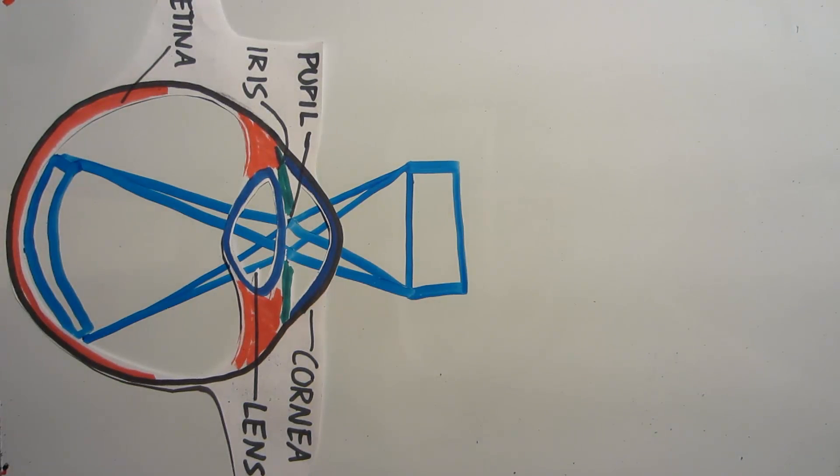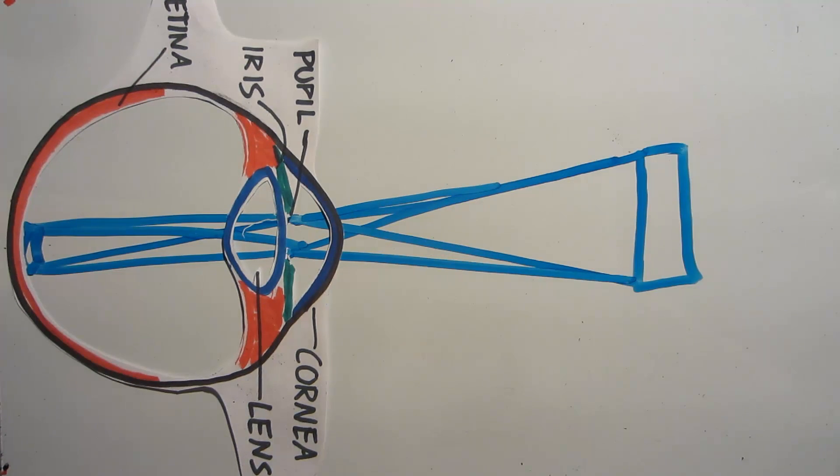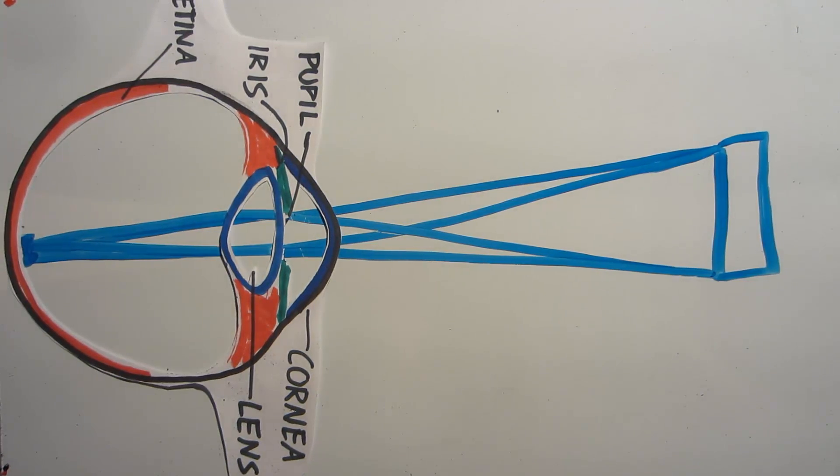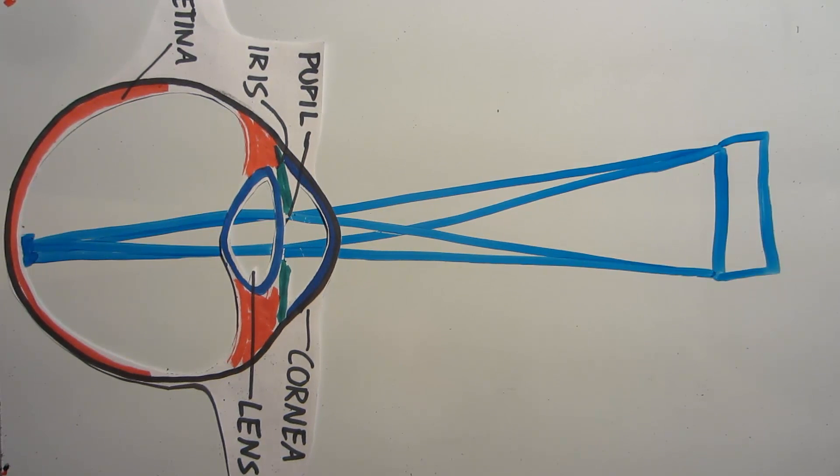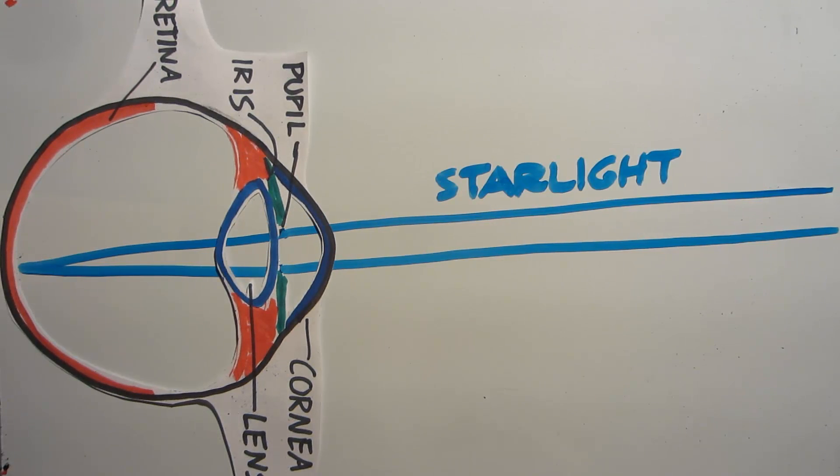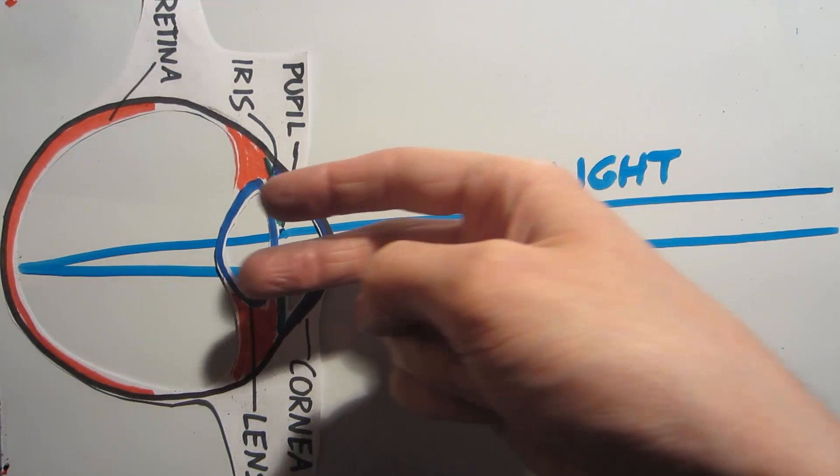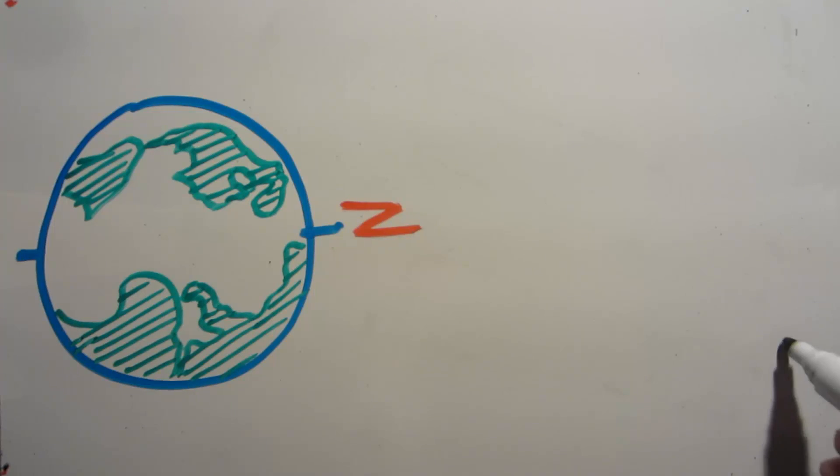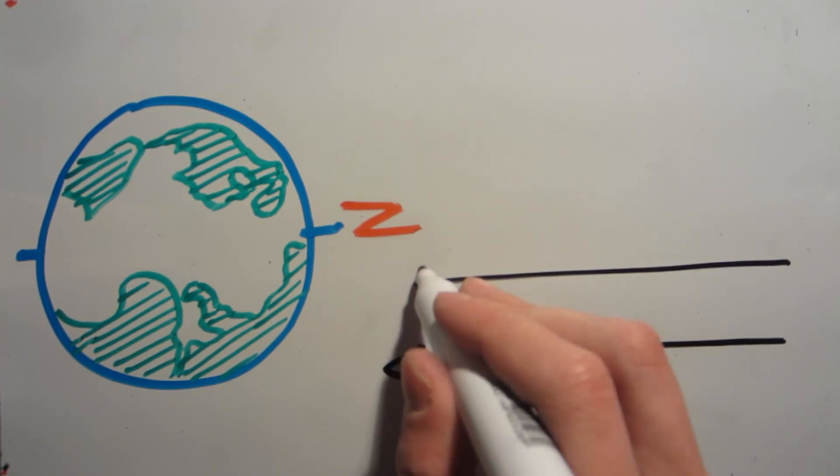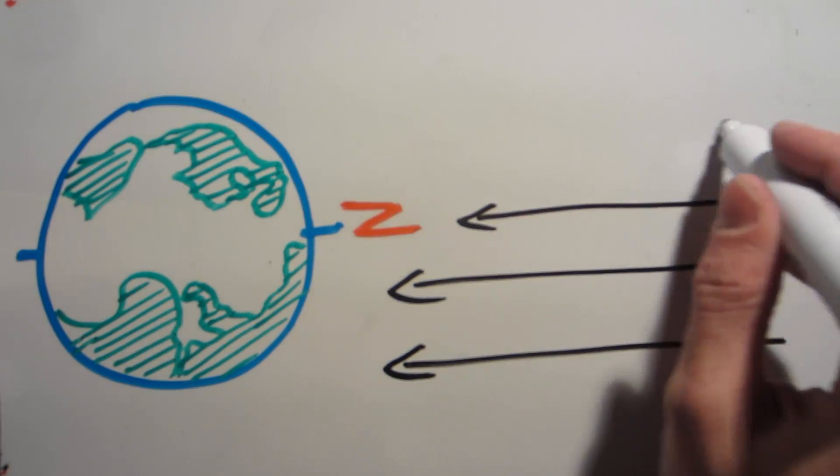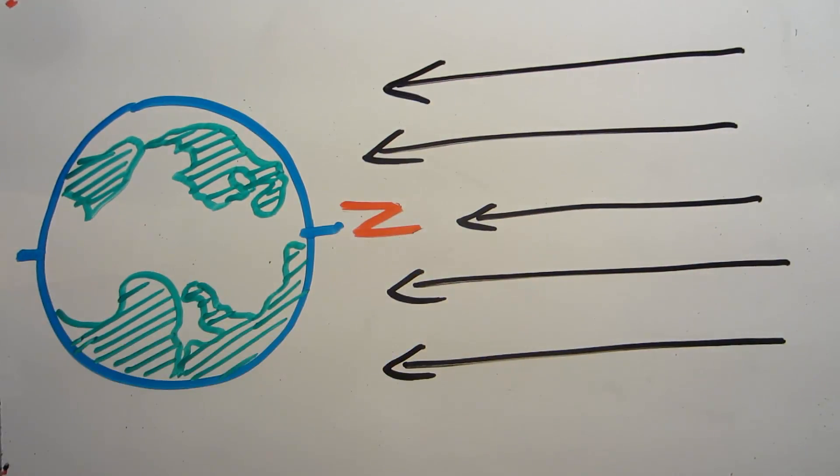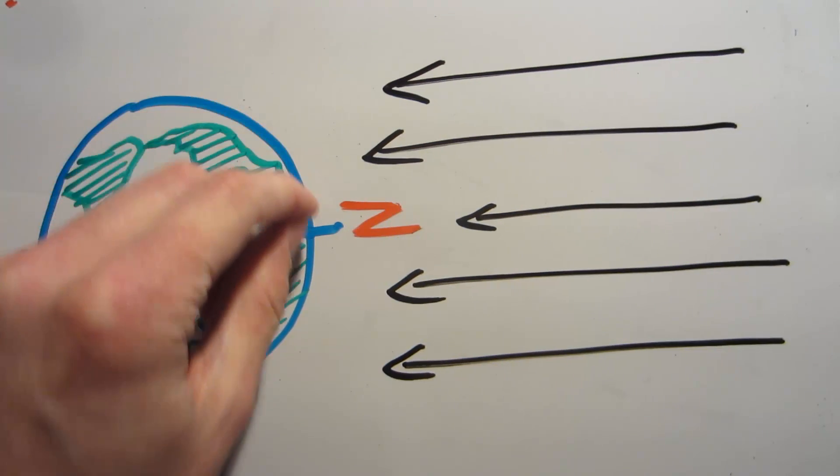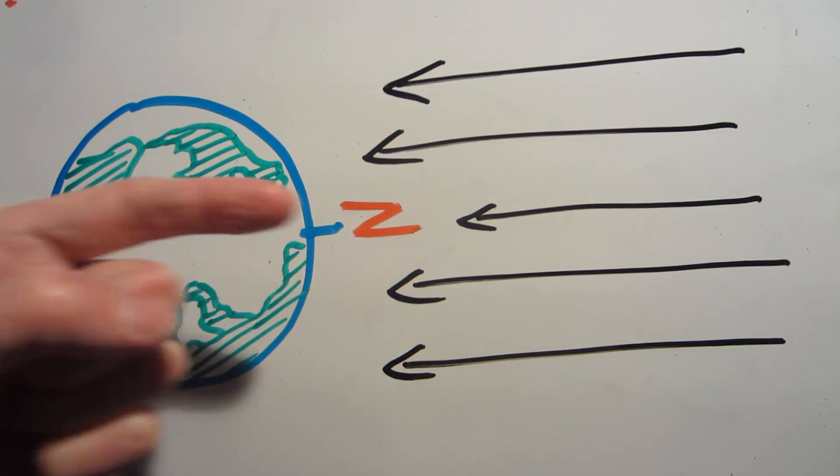Well, as objects get further and further from your eye, the light coming from each point on them gets more and more parallel. And so this is why distant objects look smaller and more point-like. Now, stars are so far away that all of the light from them is pretty much completely parallel. This can give you kind of a new way of understanding how something like the North Star can be useful, because all of the light coming from it is pretty much aligned with the North-South axis of the Earth. And so anywhere you look at this star from the surface of the Earth, your line of sight will be aiming to the North.